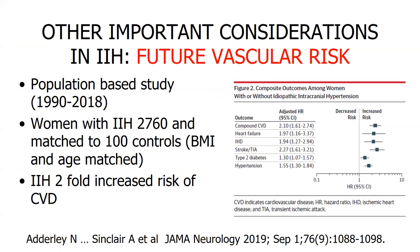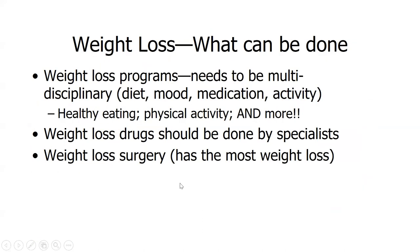Getting IIH under control is critical not just for vision but for overall health. Women with IIH have almost twice the risk of heart failure and stroke, and higher rates of type 2 diabetes and hypertension compared to the general population. So controlling this disease also reduces future cardiovascular risk. Weight loss programs need to be multidisciplinary — addressing diet, exercise, emotional factors, and medication effects.